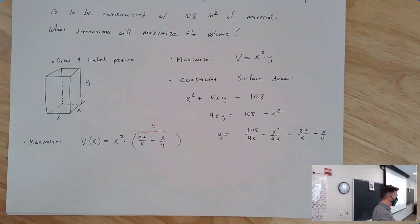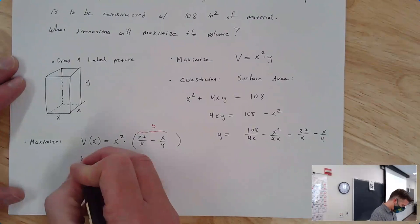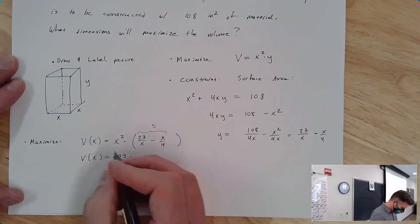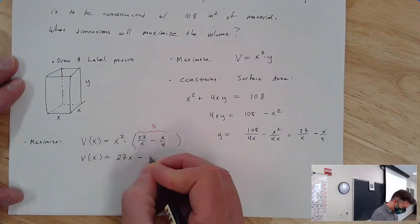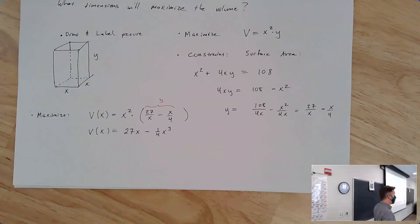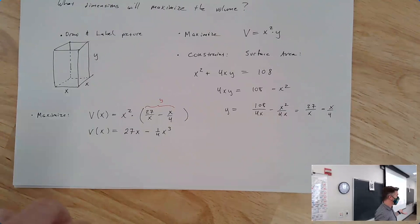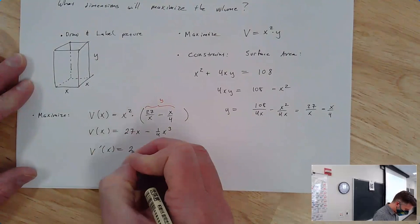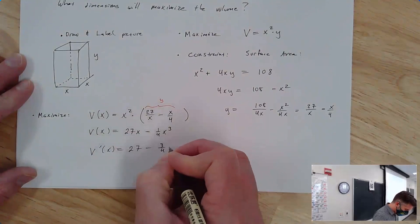Although we could use the product rule, let's multiply this out before differentiating. The volume as a function of x: x squared times 27 over x gives 27x, and x squared times x over 4 gives one fourth x cubed. Now we finally get to use calculus — we take a derivative to find where we have a maximum. The derivative is 27 minus three fourths x squared.